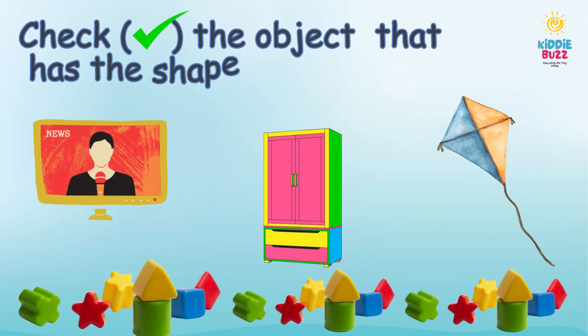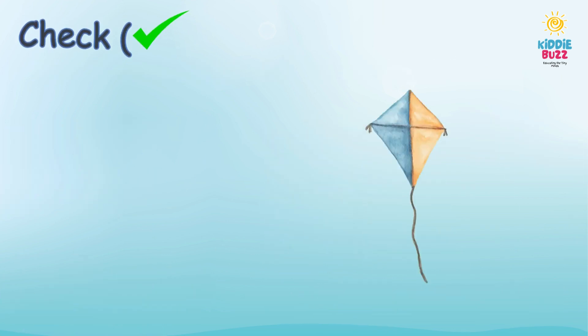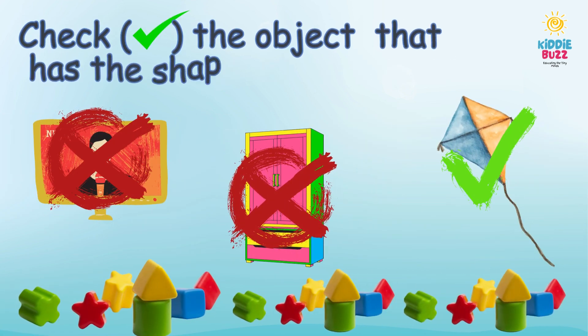Check the object that has a shape of a diamond. It's a kite.